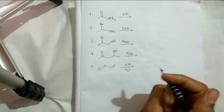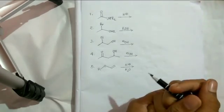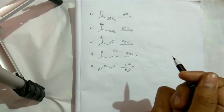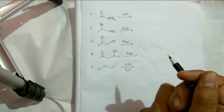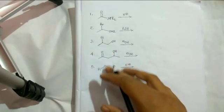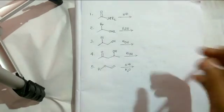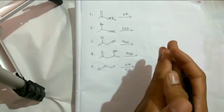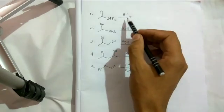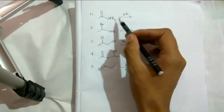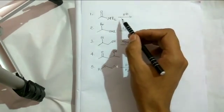Welcome to Chemistry Lover. In this video I am going to discuss common mistakes while writing reaction mechanisms. I picked up five different steps from different reactions and will discuss them one by one. The first one is the protonation of an amide — a step you often encounter while writing any reaction mechanism.